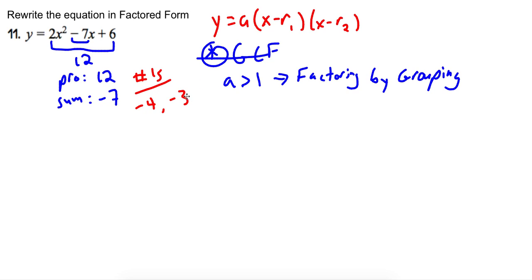So what those numbers tell me what to do is they tell me how to split up this middle term. I can split this up into a negative 4x minus 3x. And that's what I'm going to do first. Let's go ahead and do that right here. Y is going to equal 2x squared. I'm keeping that the same. And we're going to split up the 7x into negative 4x minus 3x plus 6.